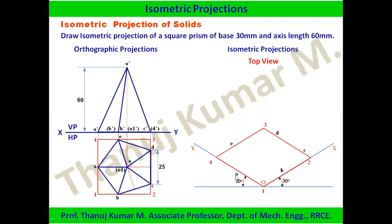Measure 1-A, then 1-B, then 2-C, then 3-D, then 4-E (or 3-E), convert each to isometric scale, and locate the corresponding points. After locating all points, join them to form the base: A to B, B to C, C to D, D to E, E to A.